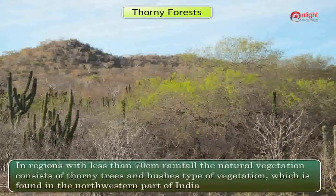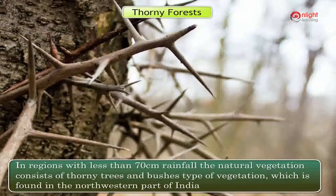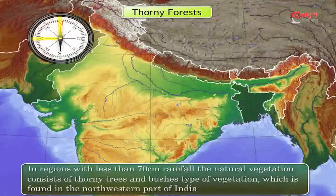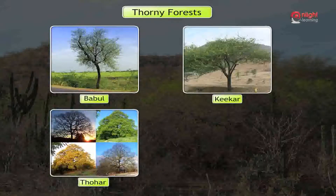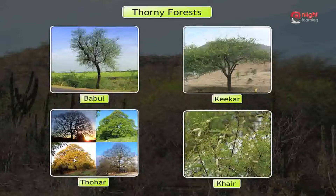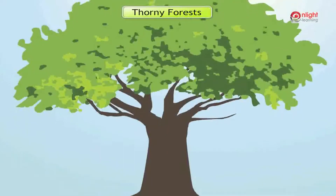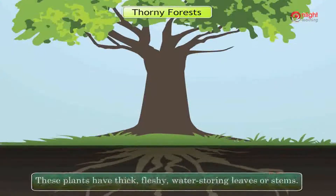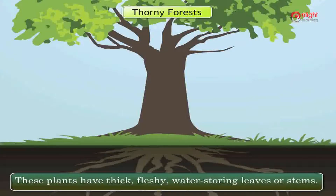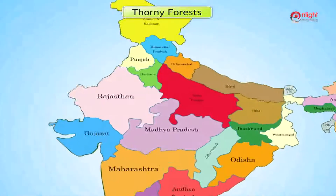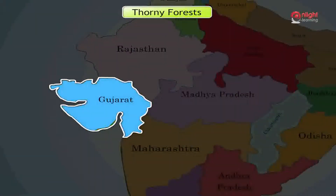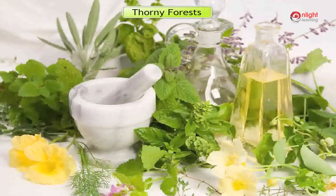Thorny forests: In regions with less than 70 cm of rainfall, the natural vegetation consists of thorny trees and bushes — a type of vegetation found in the north-western part of India. Trees like Babool, Kikar, Thohar and Kher are the main plant species. Trees are scattered and have long roots penetrating into the soil to get moisture. These plants have thick, fleshy, water-storing leaves or stems. These forests are found in Rajasthan, Punjab, Central Maharashtra, East Karnataka and Gujarat. Most of the plants in these regions are very medicinal.